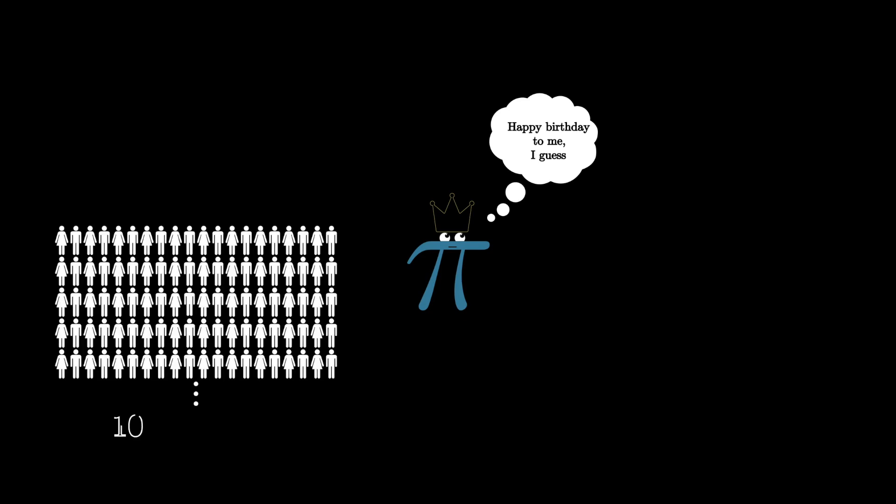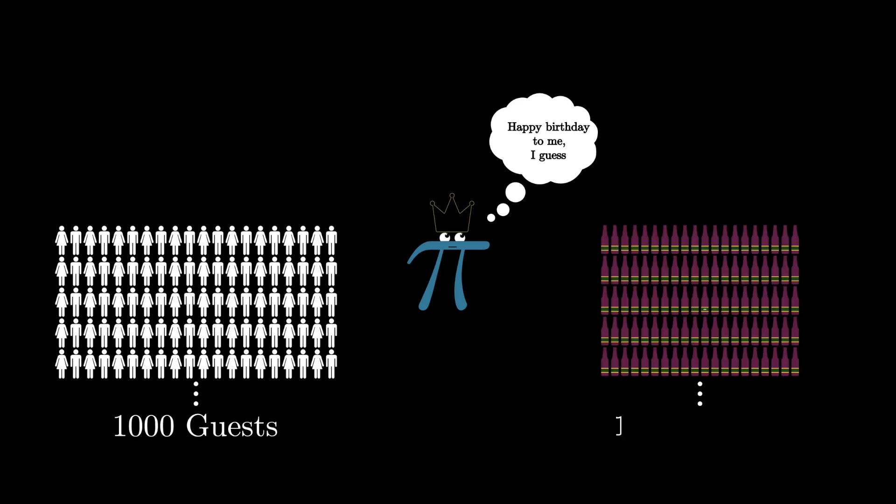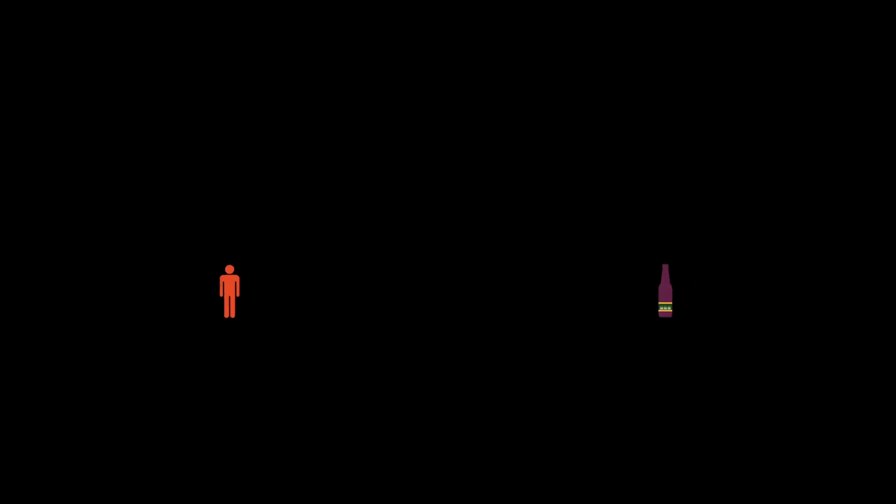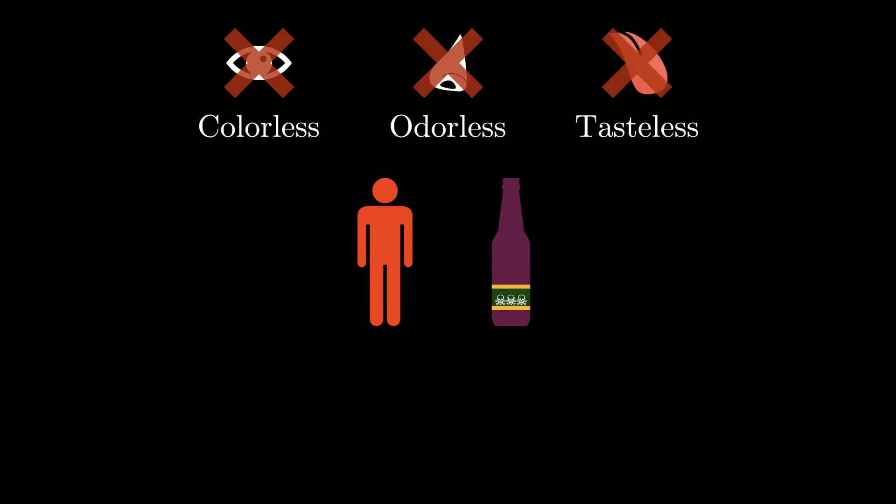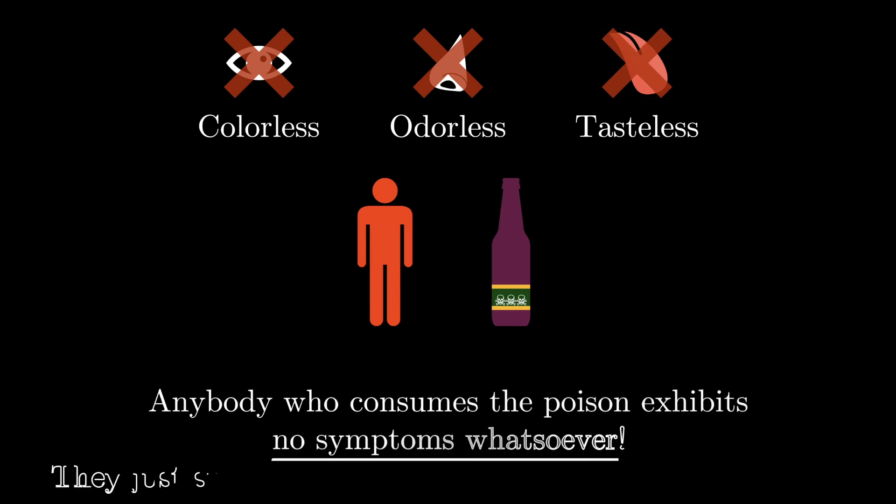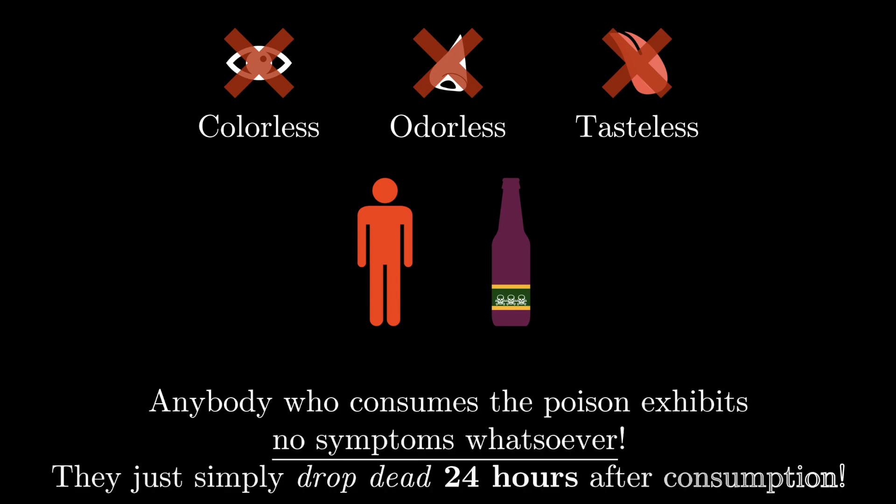So the problem goes as follows. It's the king's birthday and the land is abuzz with pomp and celebration. A thousand guests are invited to a grand party and each of the guests brings as a present an identical bottle of wine. But amongst these guests is one traitor who has poisoned the bottle that they presented to the king. Now the poison they have used is colorless, odorless and tasteless. It doesn't affect the taste or appearance of the wine in any way. Furthermore, anybody who consumes it exhibits no symptoms whatsoever. They just simply drop dead 24 hours after consumption.